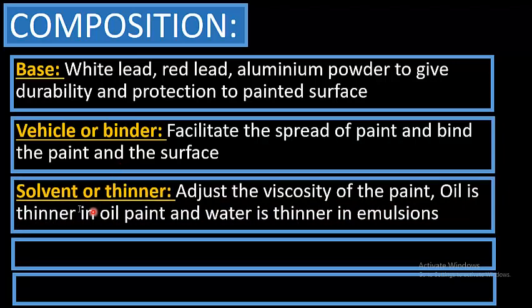The third component in paint composition is solvent or thinner, which adjusts the viscosity of the paint. Oil is the thinner in oil paints and water is the thinner in emulsions. So there are two main types: oil paint and emulsion paint.